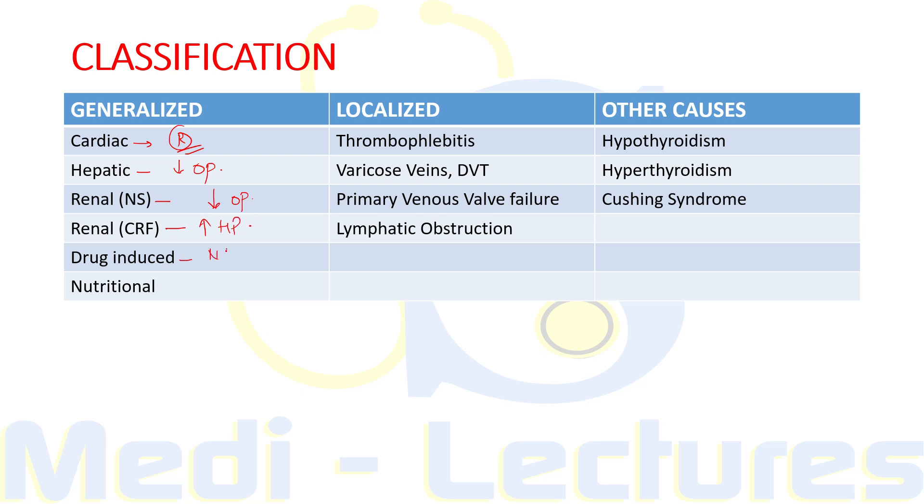Drugs which can lead to generalized edema include NSAIDs, glucocorticoids, anti-diabetic drugs like pioglitazone, calcium channel blockers like amlodipine. These drugs cause edema due to various mechanisms. Nutritional causes lead to decreased protein, leading to decreased plasma oncotic pressure.